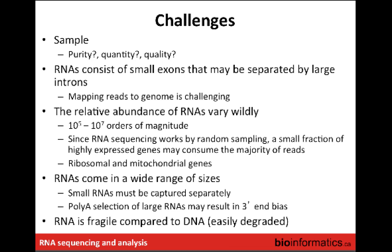Ribosomal and mitochondrial genes tend to be classes with really high abundance, so we see a lot of data corresponding to those kinds of genes in RNA-seq libraries. Relative to protein-coding genes, they can sometimes drown out the stuff we're more interested in.